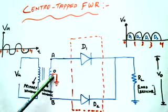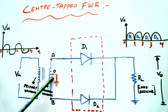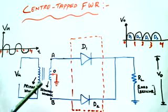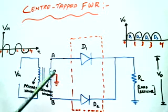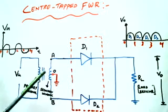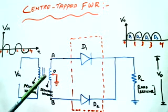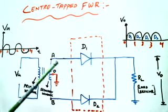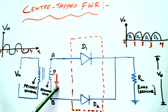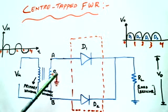The secondary winding of the transformer is divided into two halves by tapping at the center, done by connecting a wire. Therefore across the secondary winding there are two voltages of equal magnitude — OA and OB — and of opposite polarity. The value is the same but the signs are different. Hence this is called a center tap transformer, or two-phase transformer.